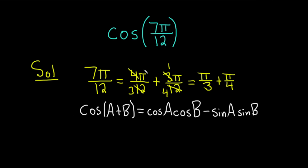So now we can just take our cosine of 7π over 12. We have the cosine of 7π over 12. And that's equal to the cosine of π over 3 plus π over 4.